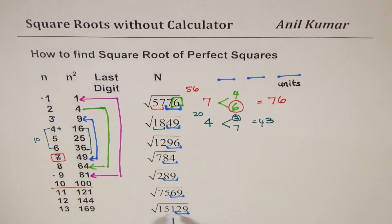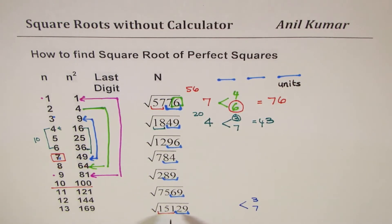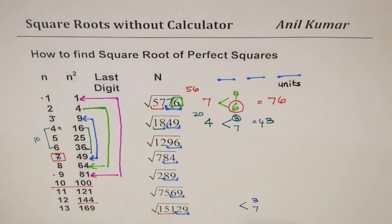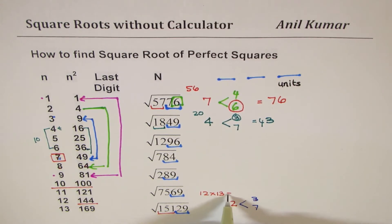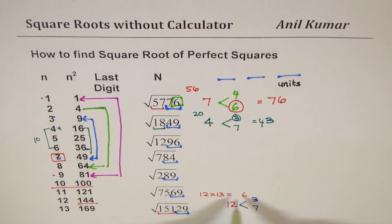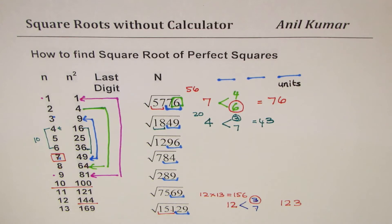Let's try a bigger number: 15129. Last digit 9 means options are 3 and 7. The left group is 151. Since 12²=144 and 13²=169, we take 12 as the tens part. To decide between 3 and 7: 12×13=156. Since 151 is lower than 156, we take the smaller number — 3. So the answer is 123, and 123²=15129.